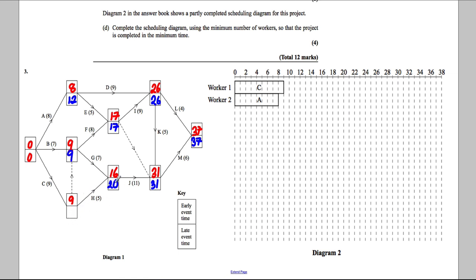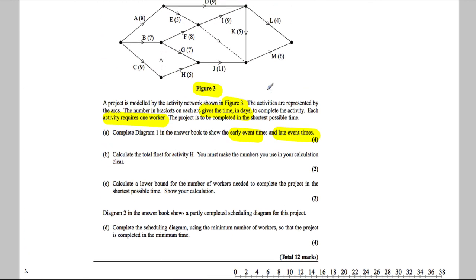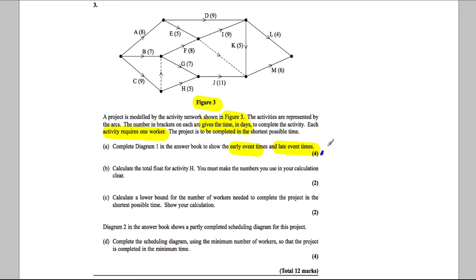For the remaining node: 20 − 5 = 15, or following the arrow direction, 9 − 0 = 9, so we write 9. That completes the forward and backward pass, and we've calculated all the early and late event times.